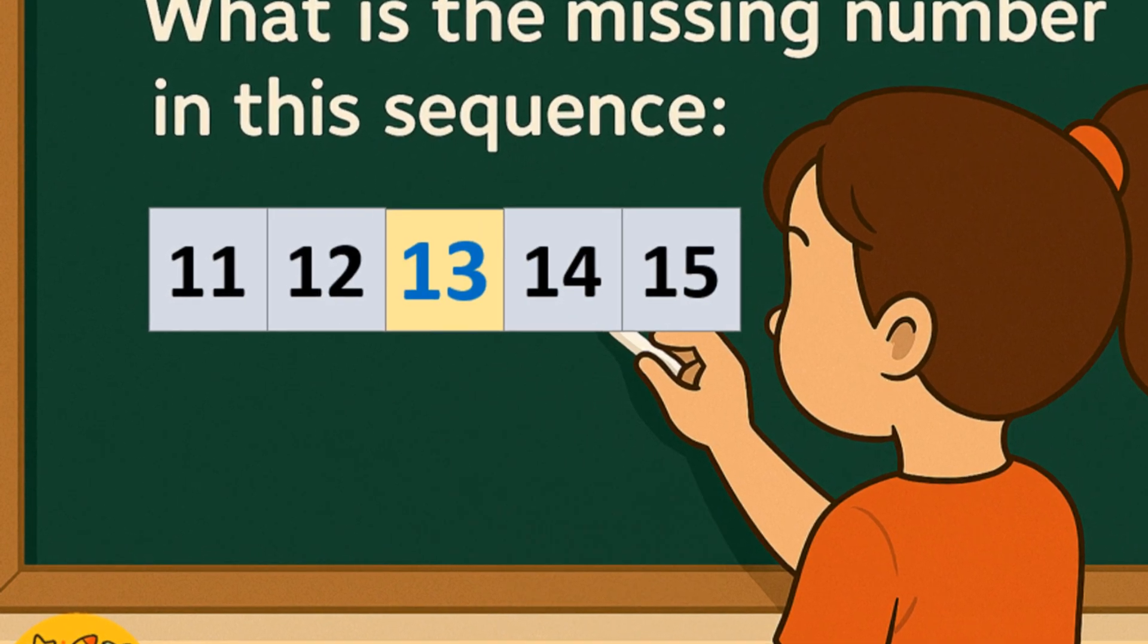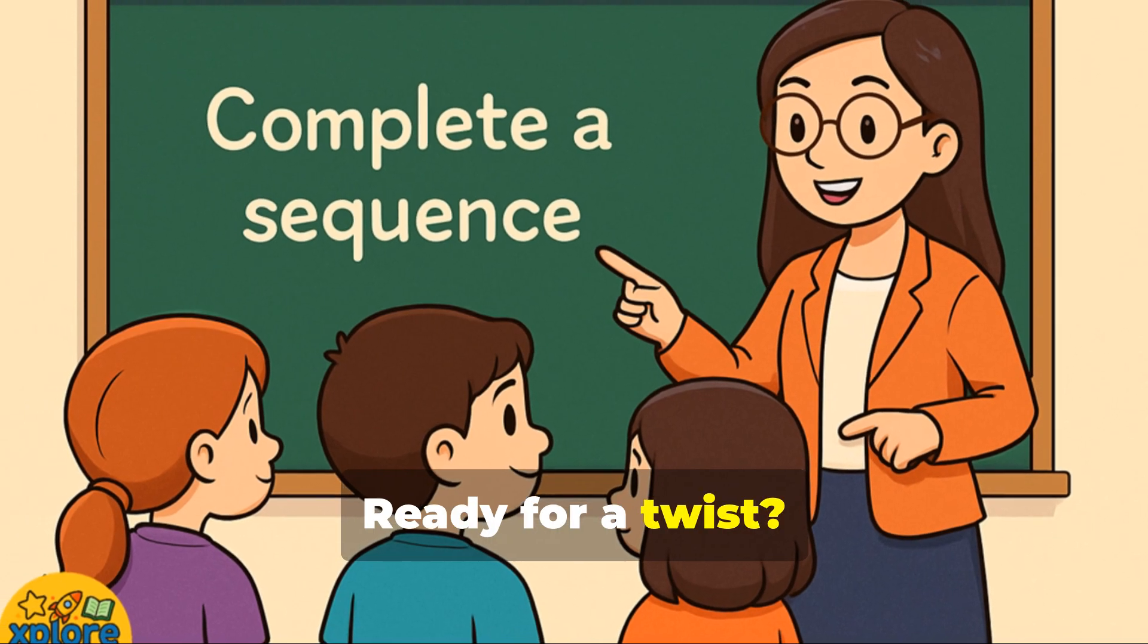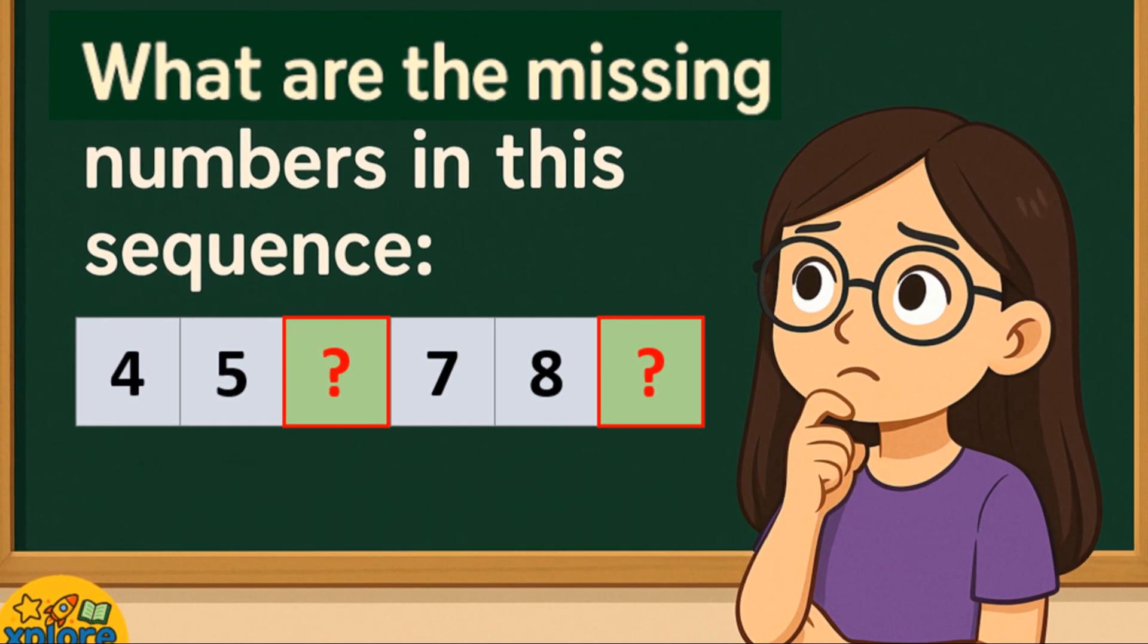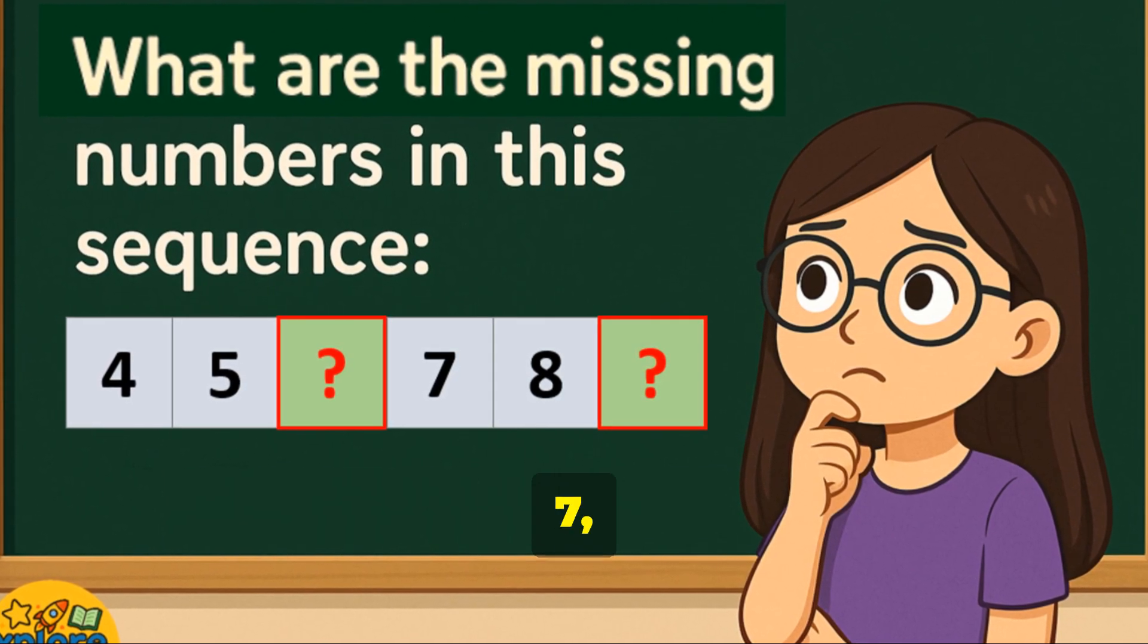Ready for a twist? What are the missing numbers? 4, 5, blank, 7, 8, blank.